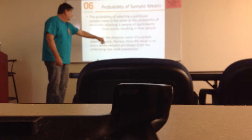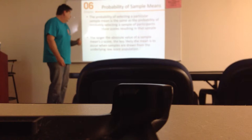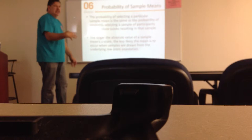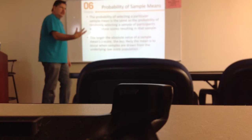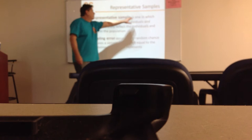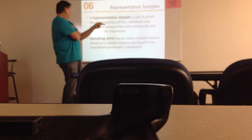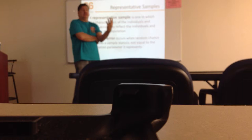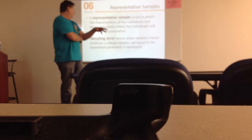The larger the absolute value of sample means' z-scores, the less likely the mean is to occur when the sample is drawn from the underlying raw scores. The better your sampling techniques, the better chance you won't make critical errors when saying that the mean is a true mean on a normal distribution. A representative sample is one in which the characteristics of the individuals and scores accurately reflect the individuals in the population. If I'm wanting to study 8th grade boys, I wouldn't look at 4th grade boys or 8th grade boys from last year — I would take current 8th grade boys and their behavior problems.